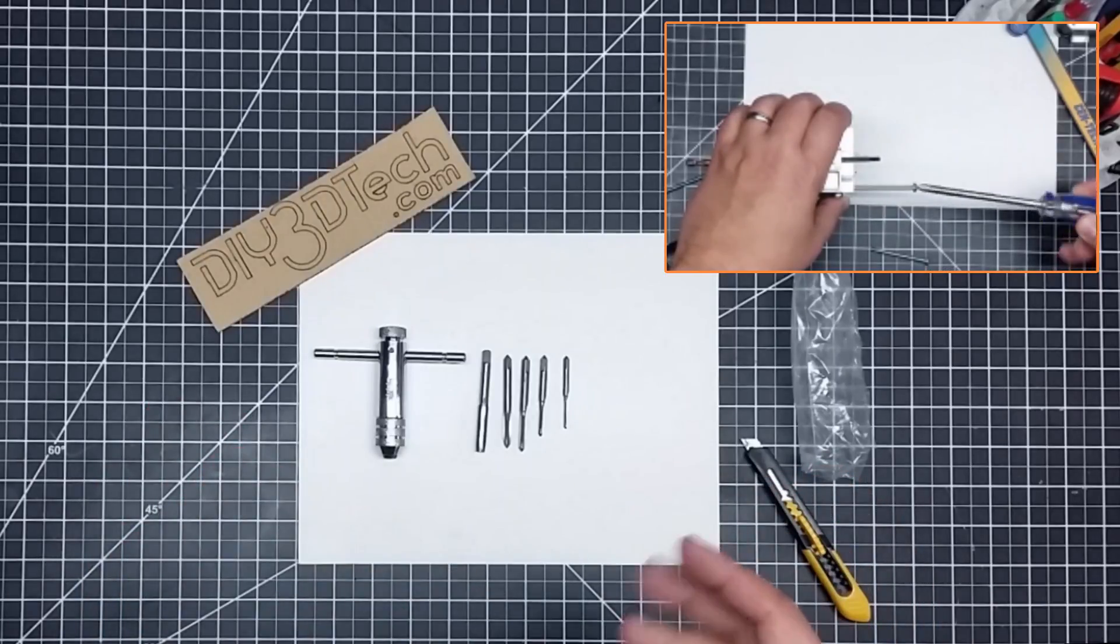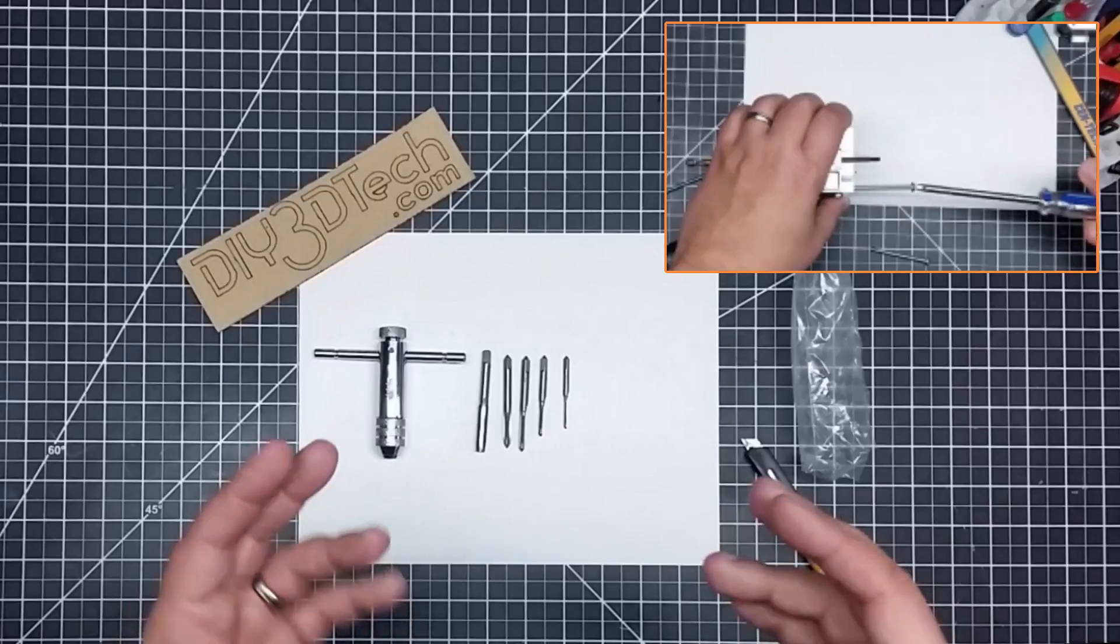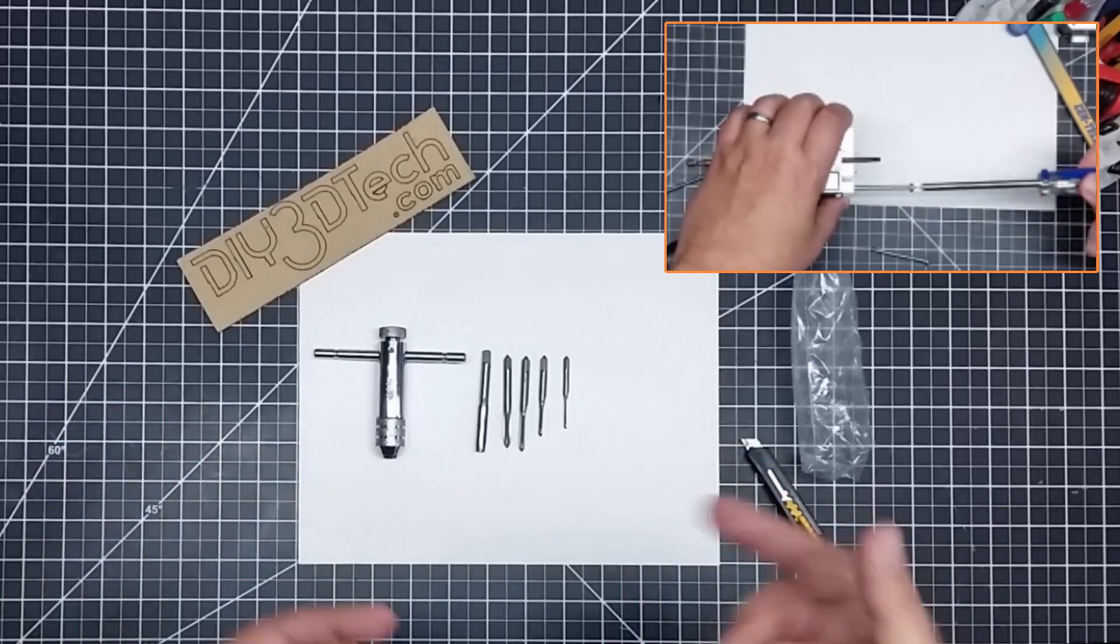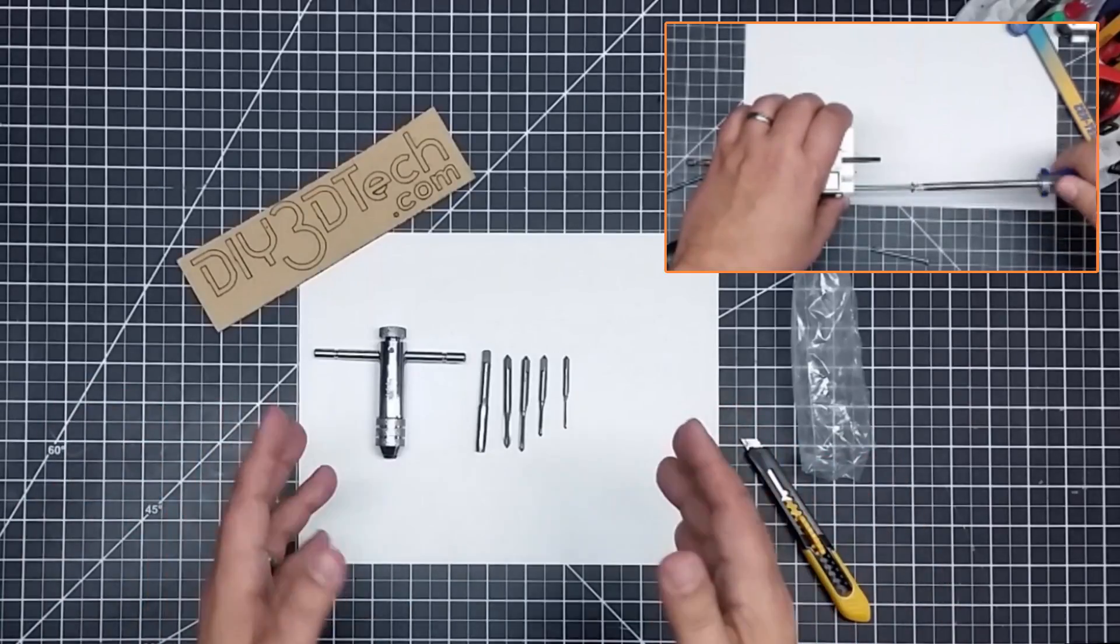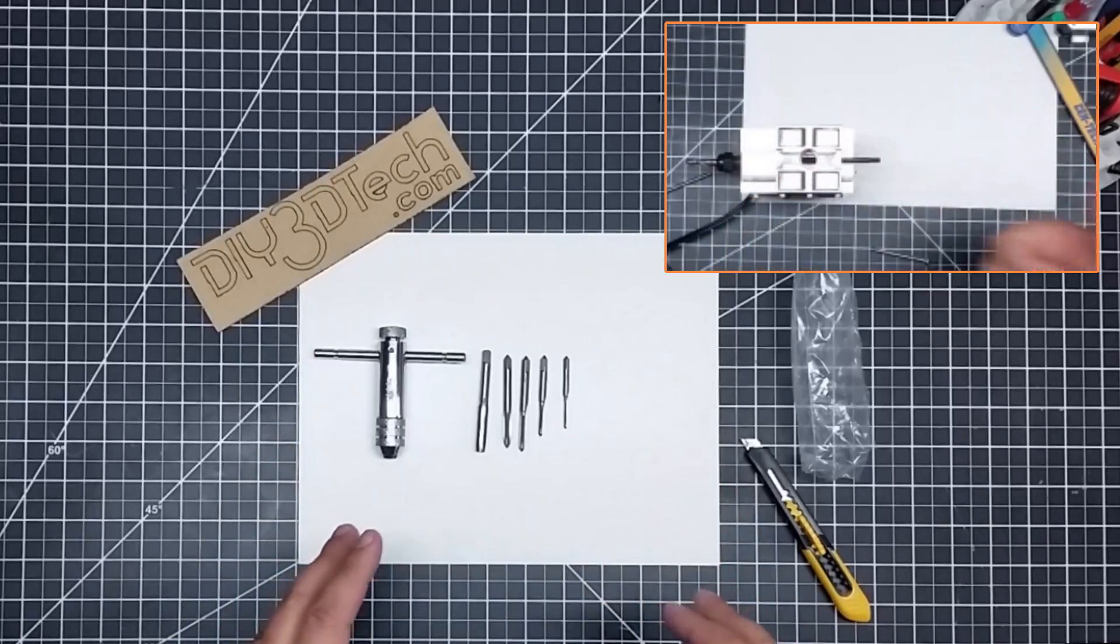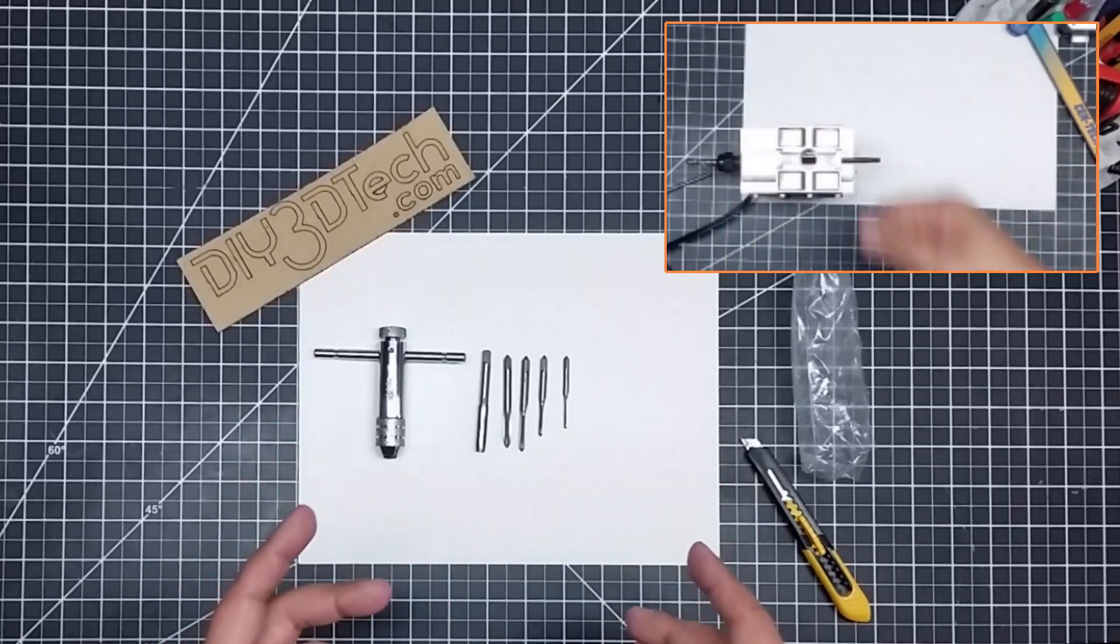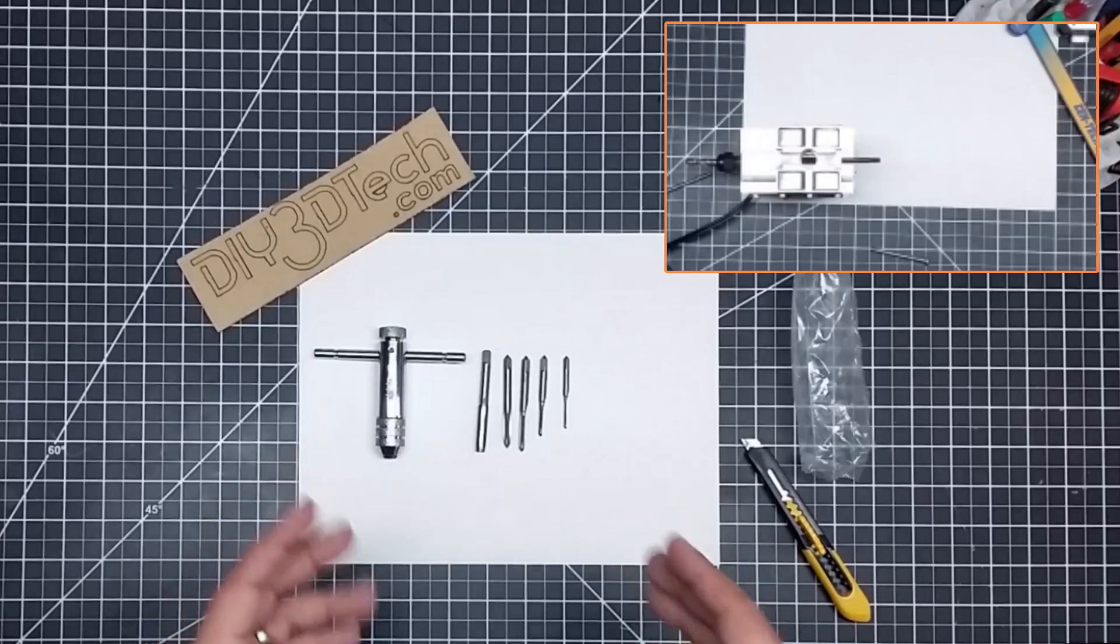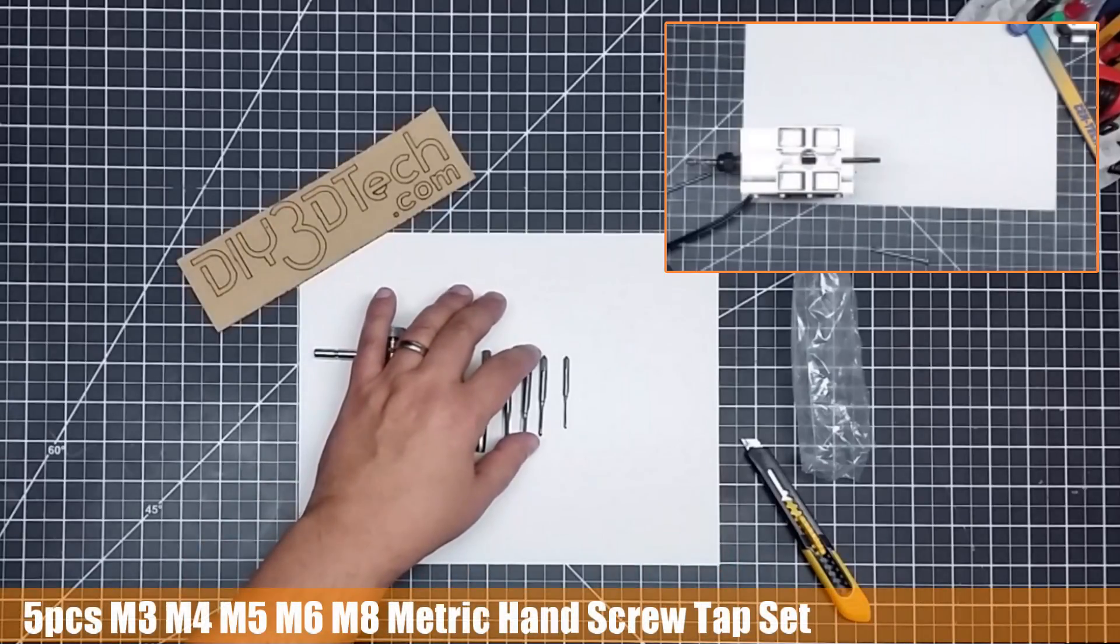Now if you're a Fusion 360 user, you know you can do threaded holes in Fusion 360, but I don't know—my experience, they don't come out clean, and if they do, they still need to be sort of reamed out. And again, this is sort of like the perfect combination at a great price point. So if you're into 3D printing, you know, this is something worthwhile picking up.